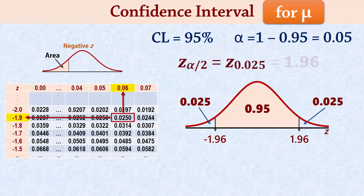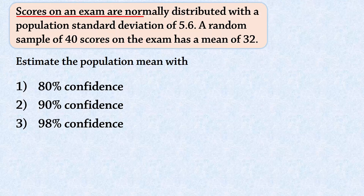Let's look at an example. Scores on an exam are normally distributed with a population standard deviation of 5.6. A random sample of 40 scores on the exam has a mean of 32.